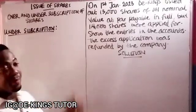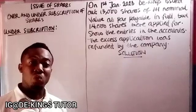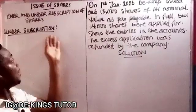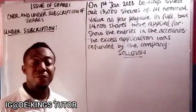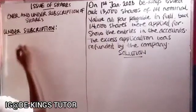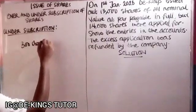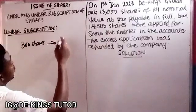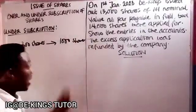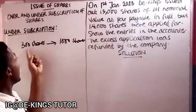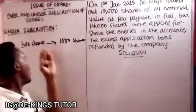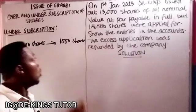Remember, the company invites the public to subscribe to shares — to become part owners by buying shares. Under subscription occurs when fewer shares have been applied for than what is available to be sold. For instance, if 1,000 shares were issued but only 300 shares were applied for, this is under subscription — those who applied are far below what was offered.